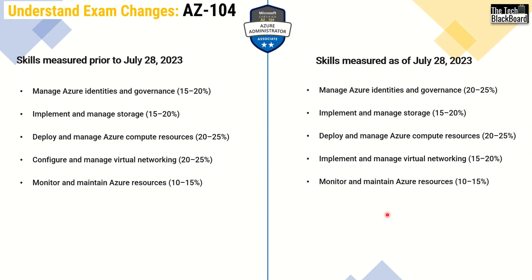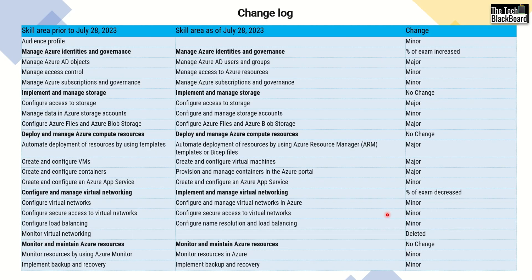Now let's check out the change log. In the first column you see all the changes prior to July 28th, then the post changes, and in the third column you can observe the gravity of the change — whether it's minor, major, or no change. You can also observe the percentage, whether it's increased or decreased.